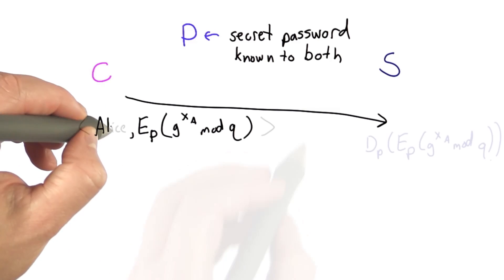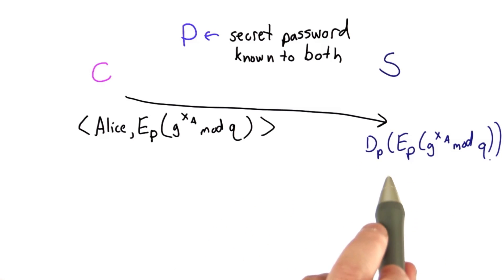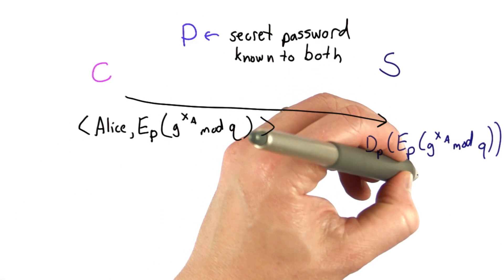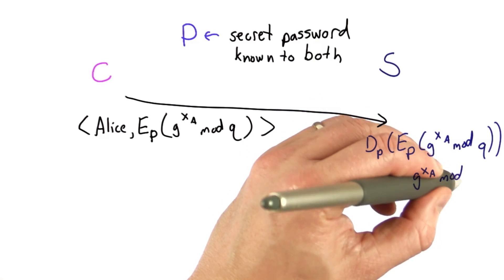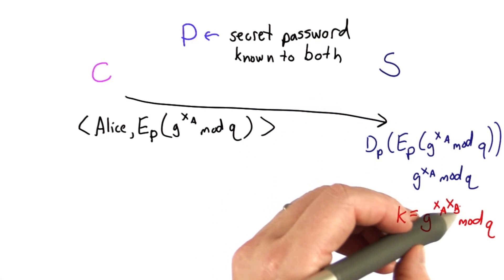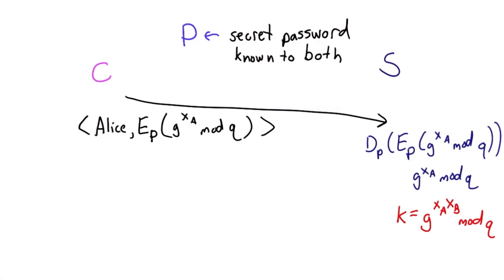When the server receives this, it can decrypt it. It knows this password, and so it obtains the value that would have been sent in the Diffie-Hellman protocol. That means it can compute a key using its secret value xb, combining that with the decrypted result here.